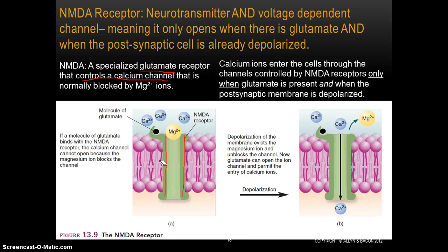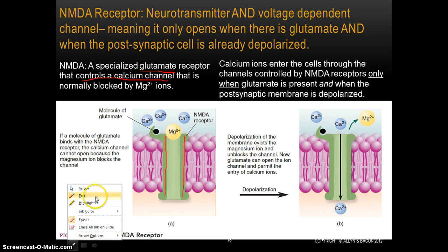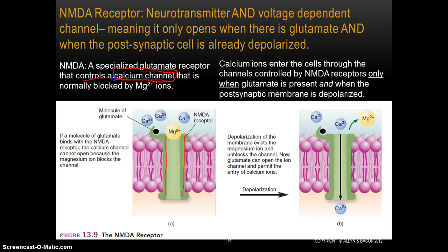This particular type of receptor, NMDA, is both a receptor — it binds with a neurotransmitter — and it's also its own channel. In particular, it's a calcium channel, which means that when the NMDA channel has been opened, it will allow the influx of calcium ions to flow through this channel, through this doorway, into the cell. One of the unique things about the NMDA receptor is that it's normally blocked — blocked by magnesium ions.